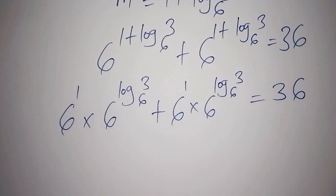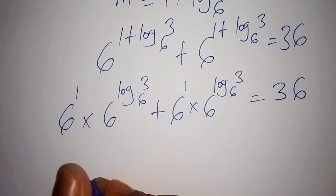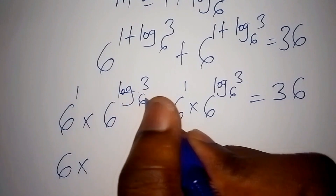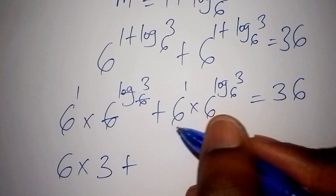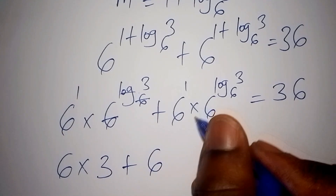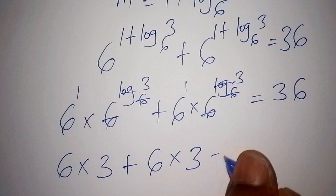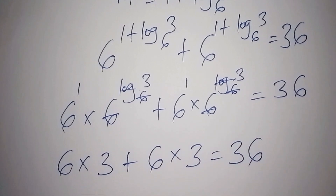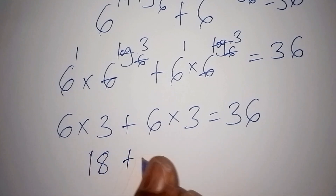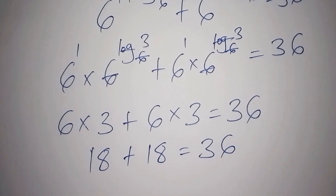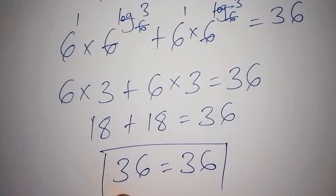Working it out: 6 to the power of 1 is 6, then multiplied by 6 to the power of log base 6 of 3. The log base 6 cancels with the base 6, leaving just 3. So we have 6 times 3, plus the same on the other side: 6 times 3. That gives 18 plus 18, which equals 36. And 36 equals 36, so we are correct.